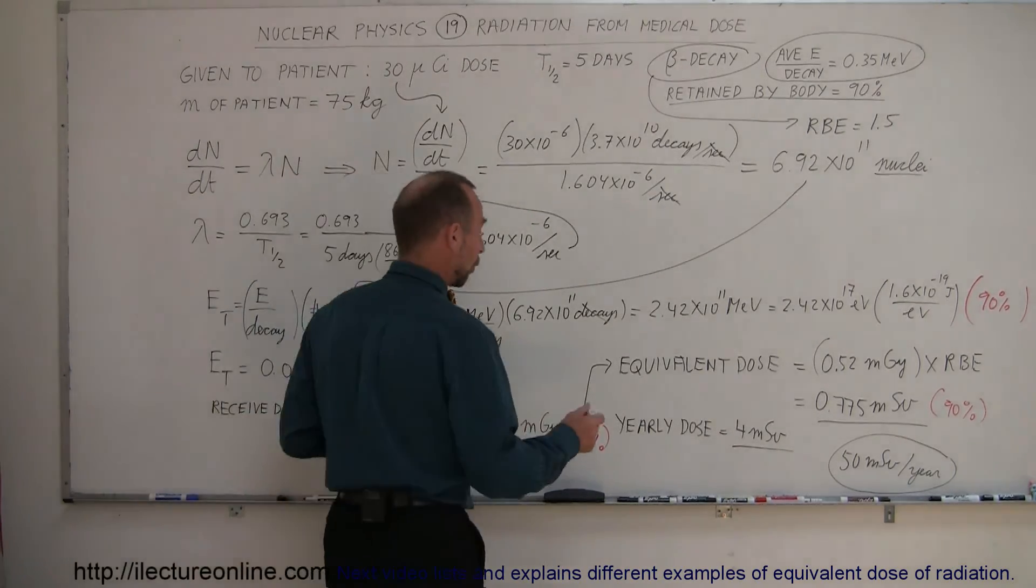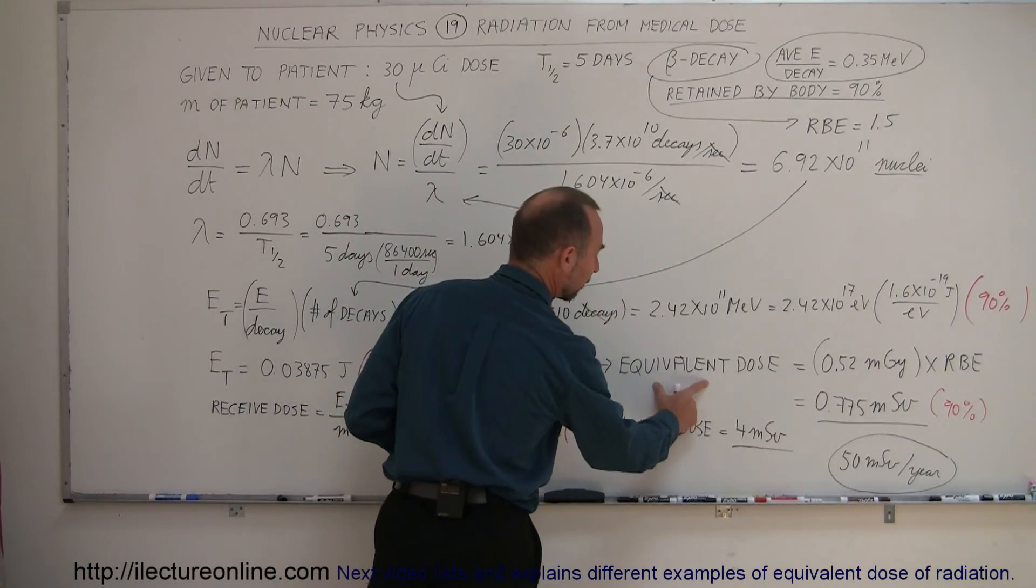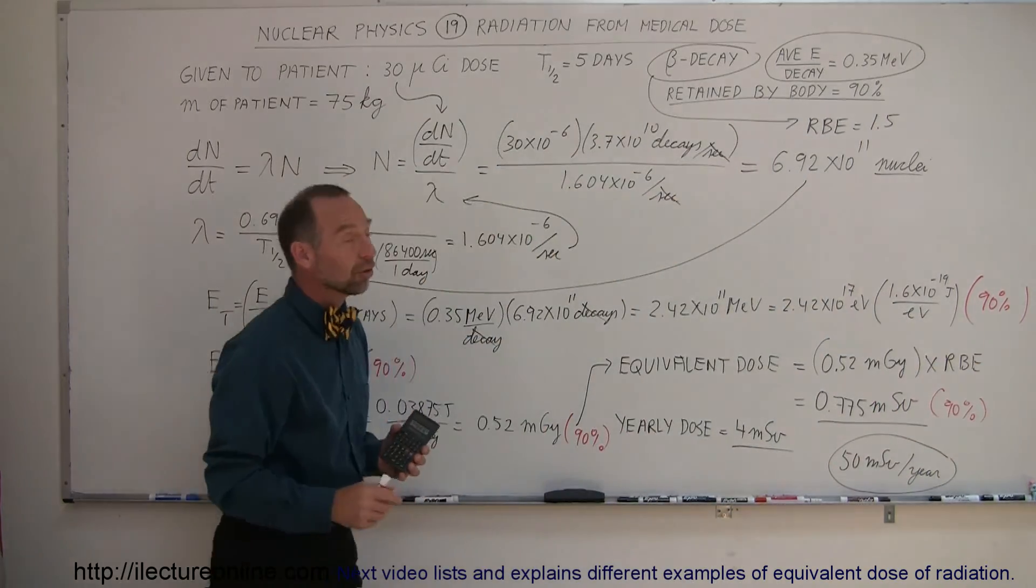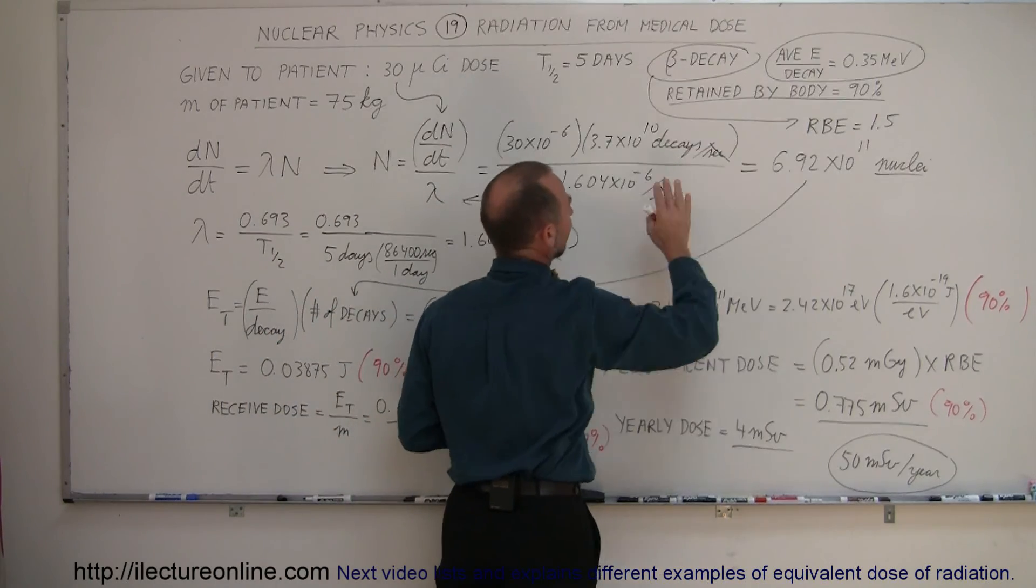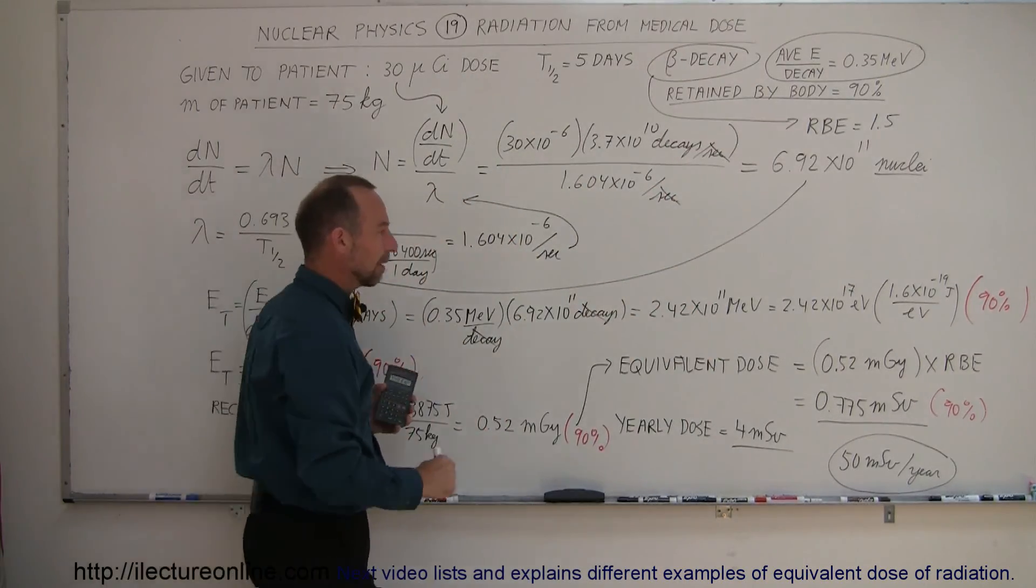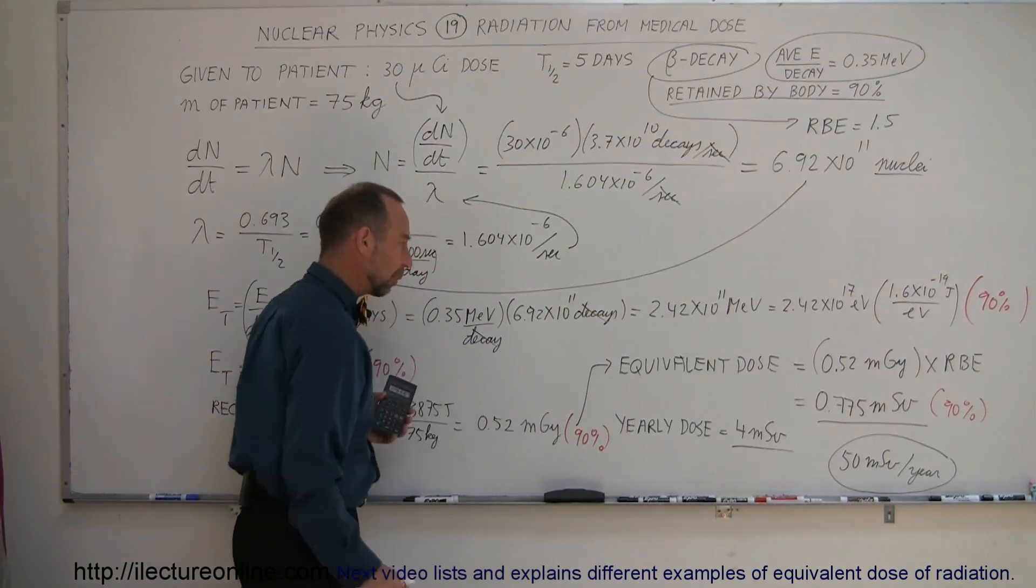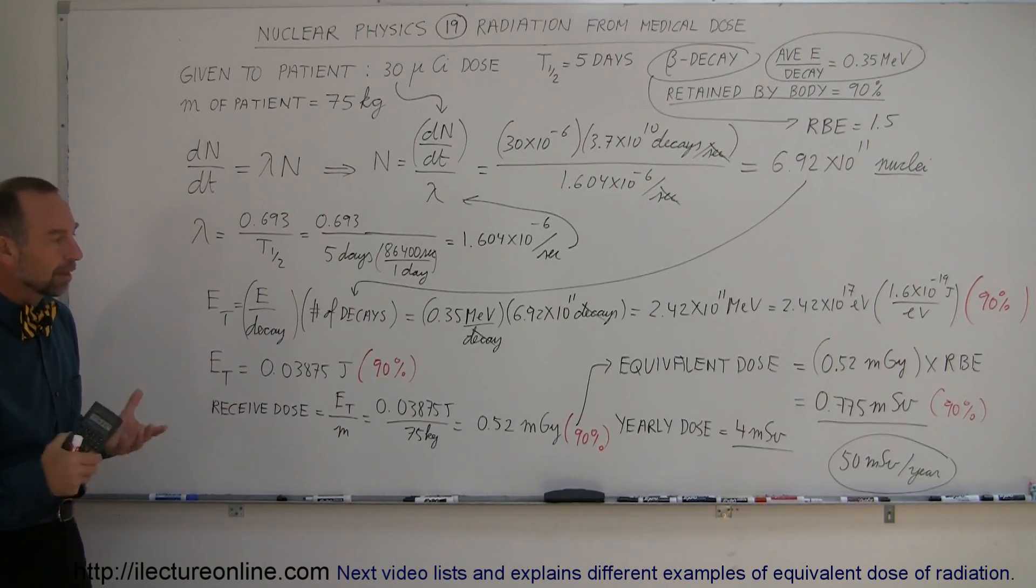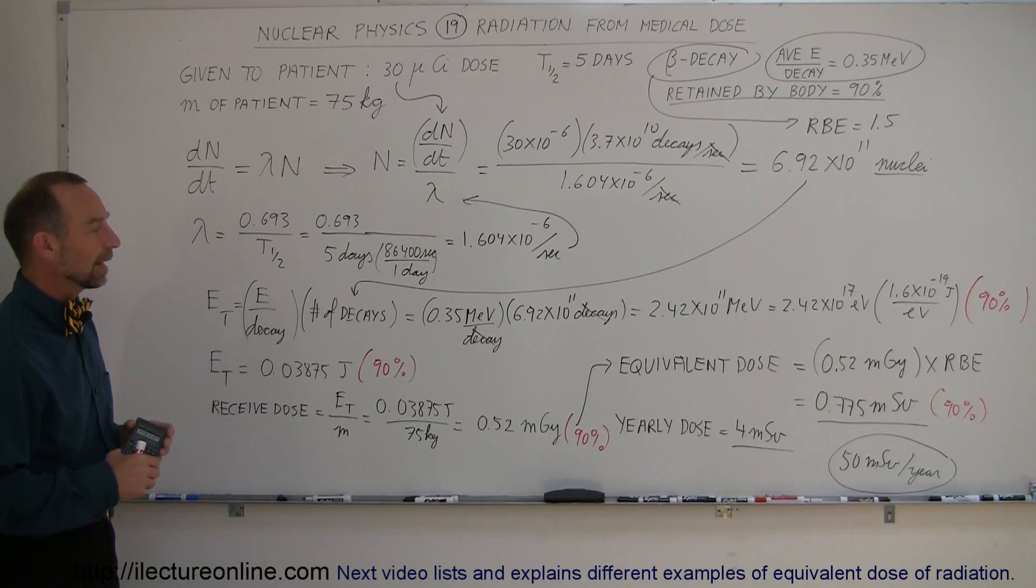Of course, we do have to make an adjustment. It's not just how much energy the body receives - the received dose - we also have to worry about the equivalent dose. So we have to take into account the damaging effect of the radiation. Since this is beta decay, which is electrons being ejected from the nuclei, the RBE is about one and a half. So then we have to multiply the total energy received by 1.5 to get what we call the equivalent dose. And of course, compared to the yearly dose that we get from natural sources, it is a percentage of that, but it's not a huge amount, so it can be safely done.